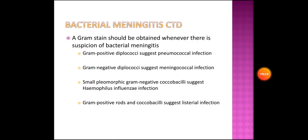A Gram stain should be obtained whenever there is suspicion of bacterial meningitis. Gram-positive diplococci suggest pneumococcal infection; Gram-negative diplococci suggest meningococcal infection; small pleomorphic Gram-negative coccobacilli suggest Haemophilus influenzae infection; and Gram-positive rods and coccobacilli suggest Listeria infection.